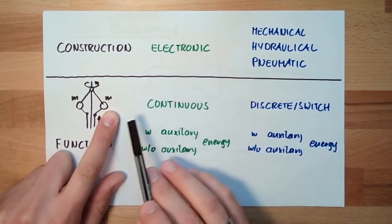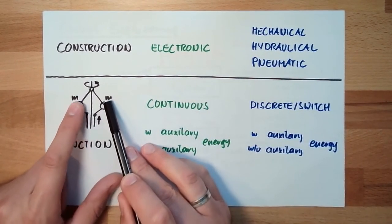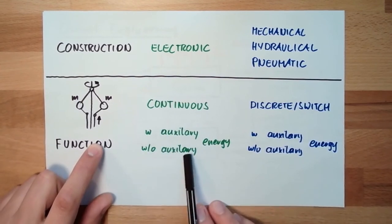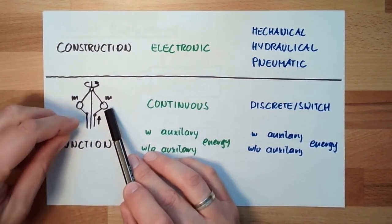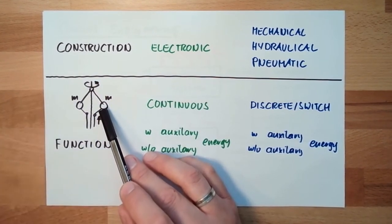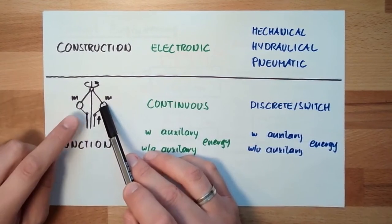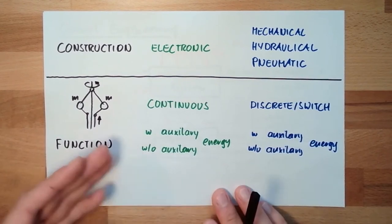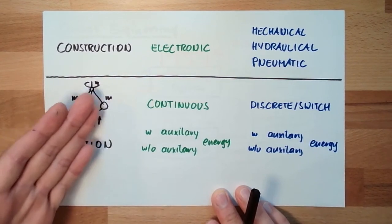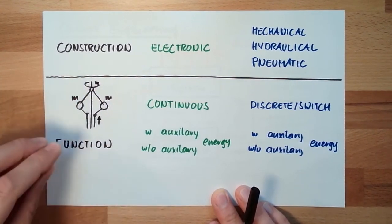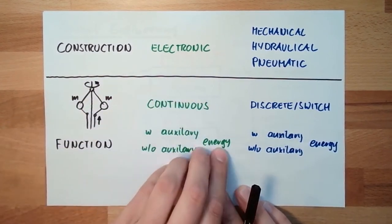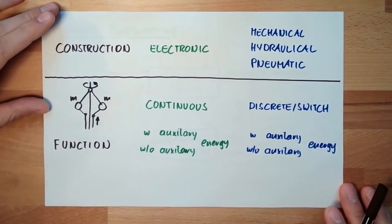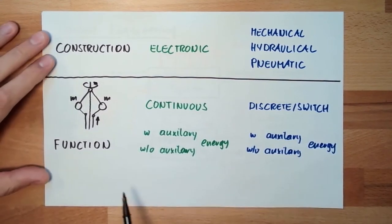It's continuous because the position of the masses can be any place — so it's a continuous variable. And it's without auxiliary energy because it simply takes the energy from the comparator, comparing the wanted speed with the actual speed. Of course, the energy is taken out of the process. So this is a mechanical governor: continuous, without auxiliary energy.